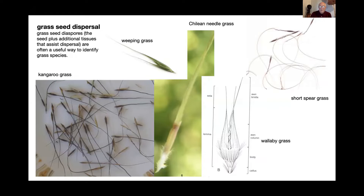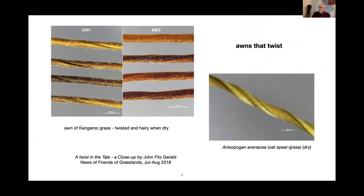An interesting thing about grasses is the way they grow — a lot of grasses have these awns, and when dry they're twisted. When the grasses have been scattered lying on the ground and they get wet, they start to unwind. Then the grass stands upright and it starts to drill its way into the ground. That's something worthwhile watching if you get the chance.